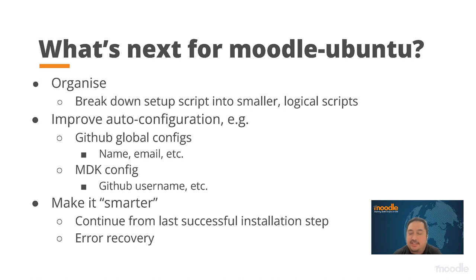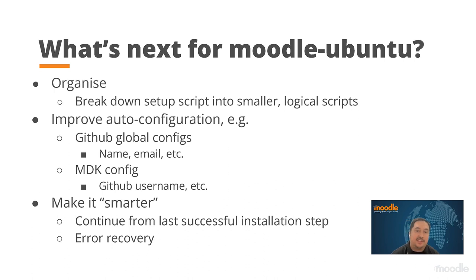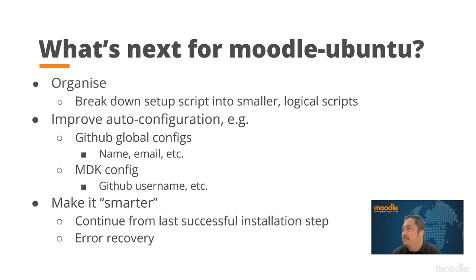What's next for this script: in the future, I'd like to break it down into smaller setup scripts and improve the auto-configuration — for example, to allow it to automatically set up your name, email, and GitHub username for your GitHub config, which is needed by MDK. And probably make it smarter, like in case of an error, allowing you to resume from the last successful installation step. That's it from me. Thank you for listening.